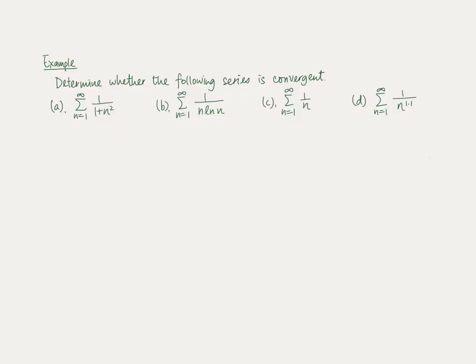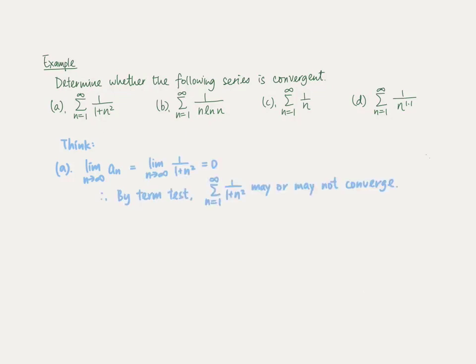Let's refer to the following example: we would like to determine whether each of the following series is convergent or not. For the first series, it is not a geometric series and it is not a telescoping series. Considering the limit of a_n as n tends to infinity — this equals 0, so by the term test we cannot conclude whether or not this series converges. It may converge or it may not. We need to use some other tests.